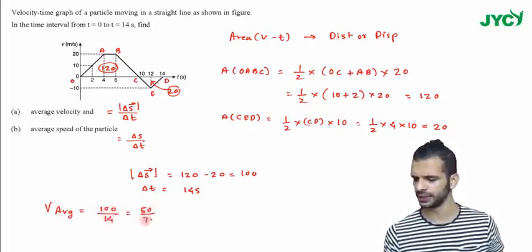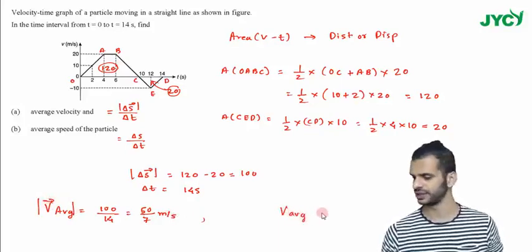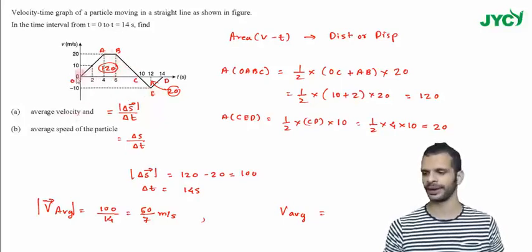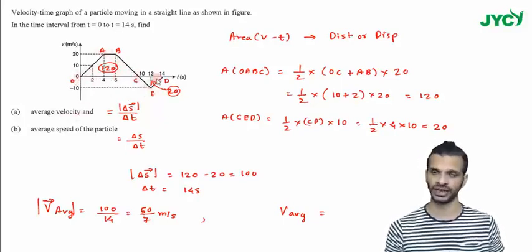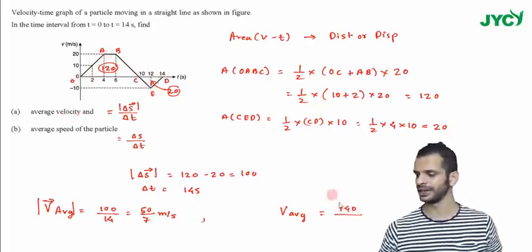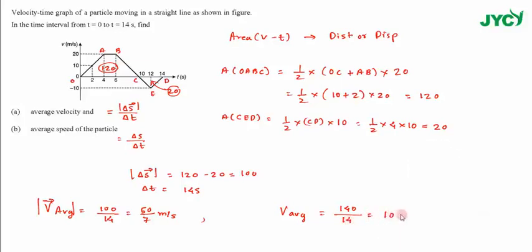So average velocity, I'll write this. For average speed, I'll simply write V average which is my average speed and it is total distance. Total distance will be 120 plus 20, I get 140 divided by total time, it is 14. So I get 10 meter per second. So answer is 50 by 7 meter per second average velocity and average speed is 10 meter per second.